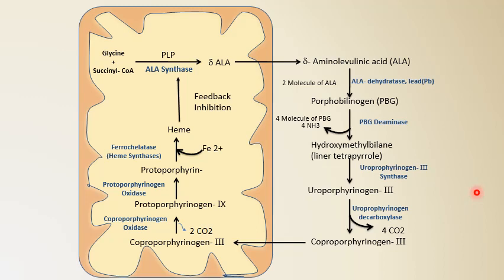Now let's see the regulation. Heme synthesis is mainly regulated by the rate-limiting enzyme ALA synthase, which is allosterically regulated by heme. ALA synthase exists in two forms: type 1, present in all cells of the body, and type 2, mainly present in erythroid precursor cells.